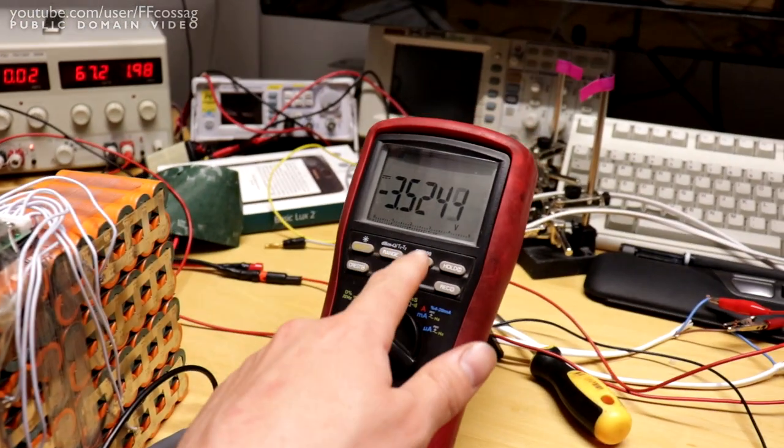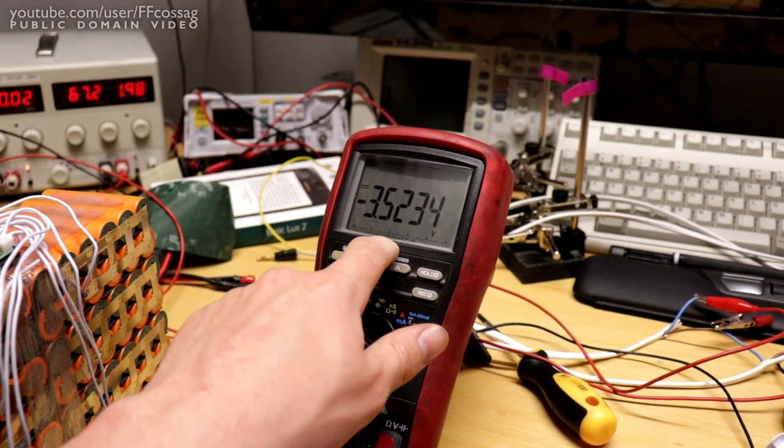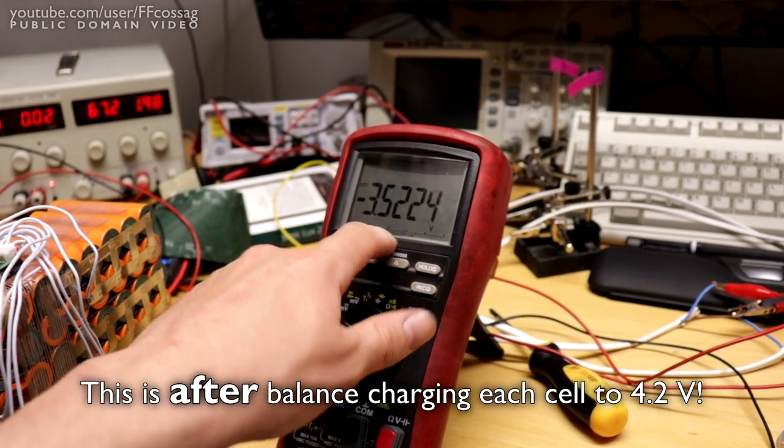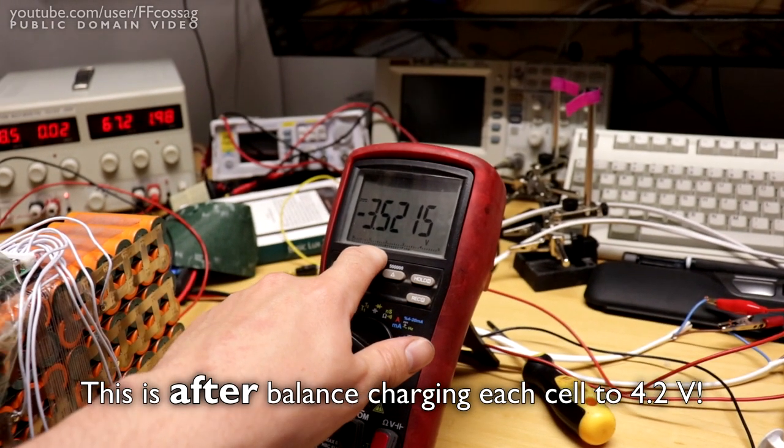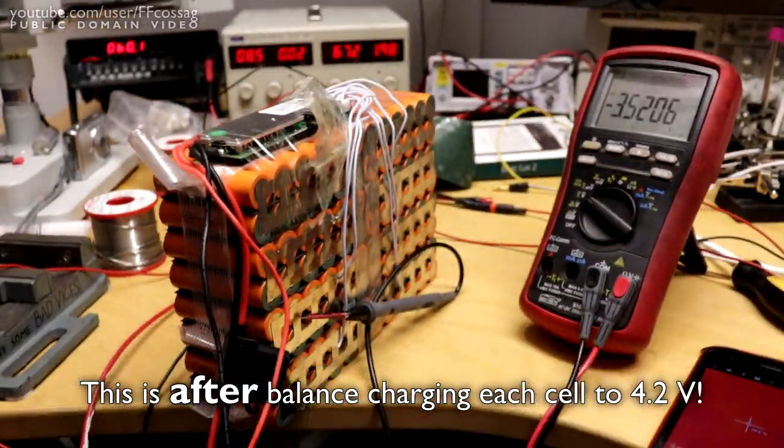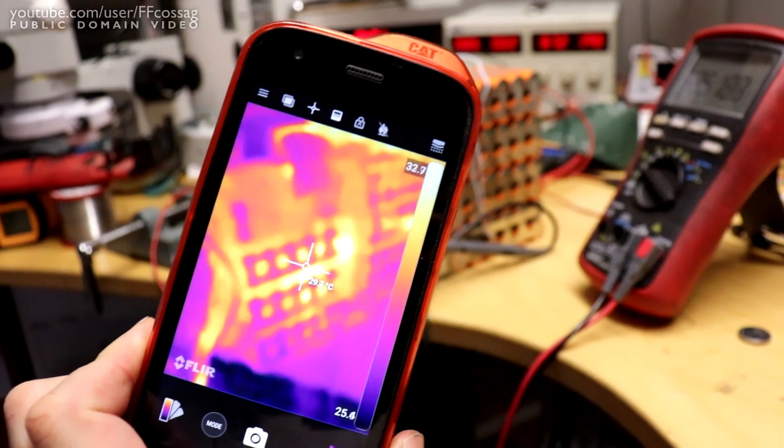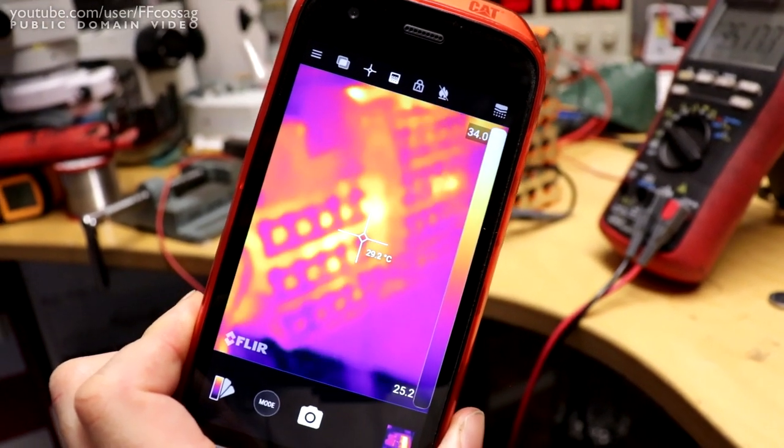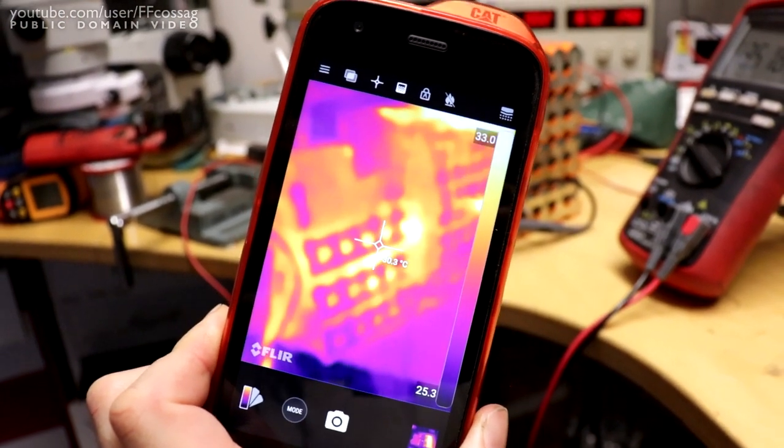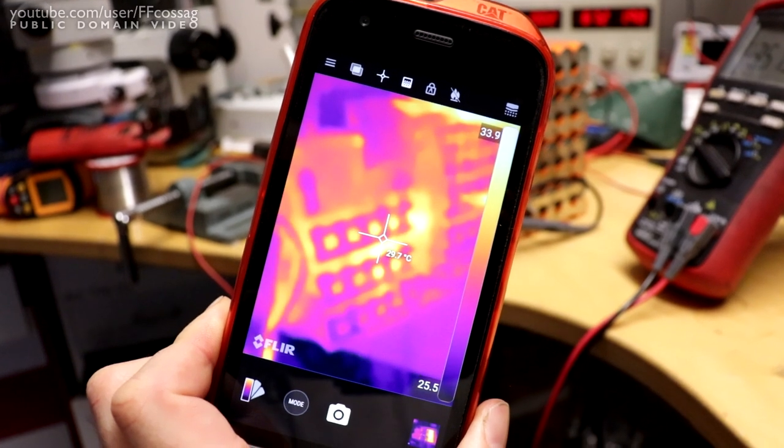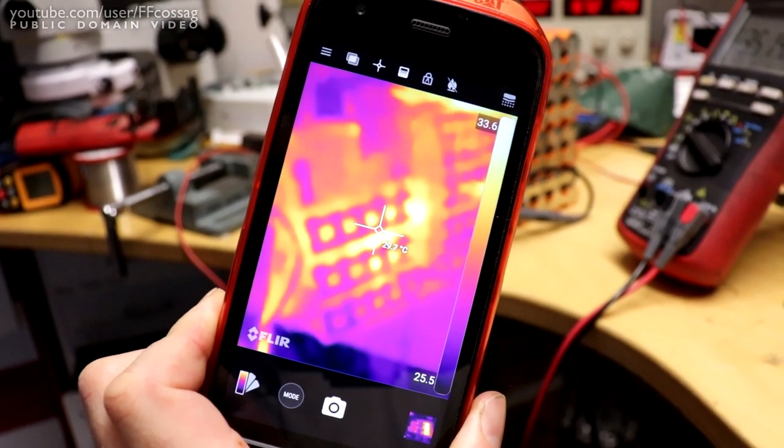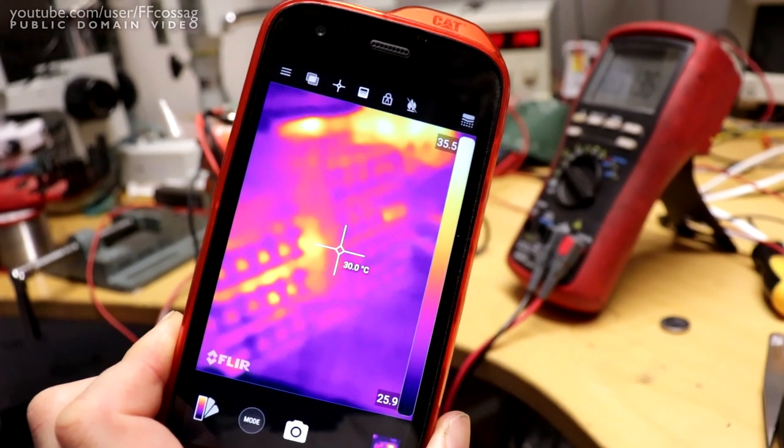I just started a cycle on it and you can see we already have a cell down at 3.5 volts. And what I'm noticing with these is that they all suffer from bad cell balance. If we look at the thermal there, you can see that we have one or two strings in the middle which are considerably hotter than the rest.